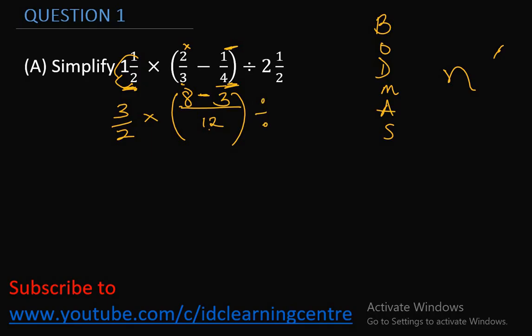Divide by, change this to improper fraction as well. 2 times 2 is 4 plus 1, 5/2. Continue with the bracket. Bring the term in the bracket down. 8 minus 3 will give me 5/12. So, this will give me 3/2 times 5/12 divided by 5/2.